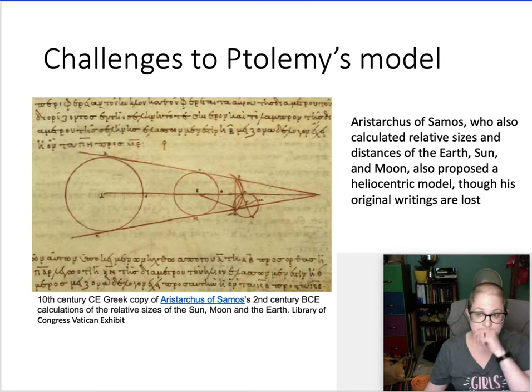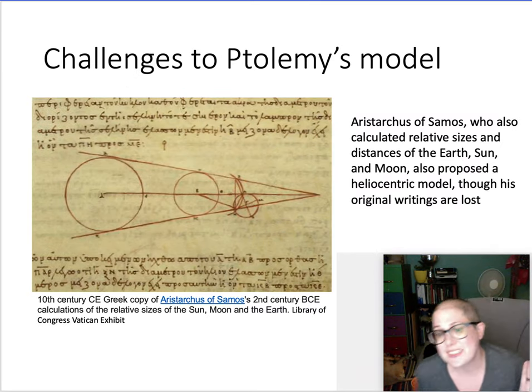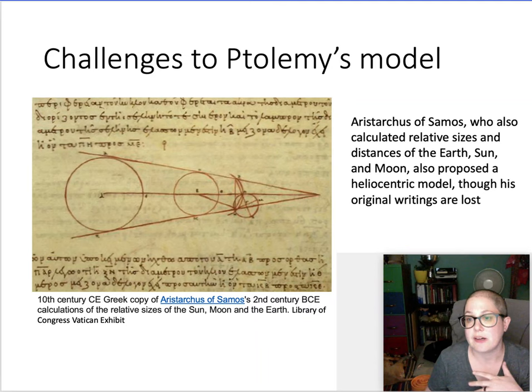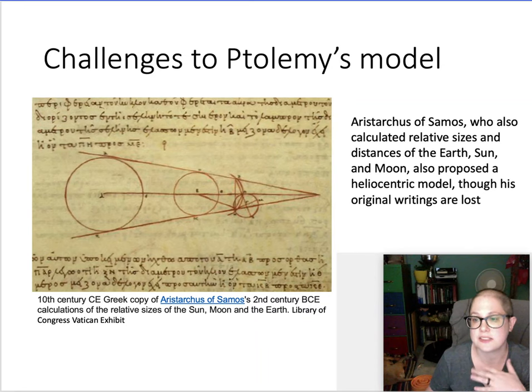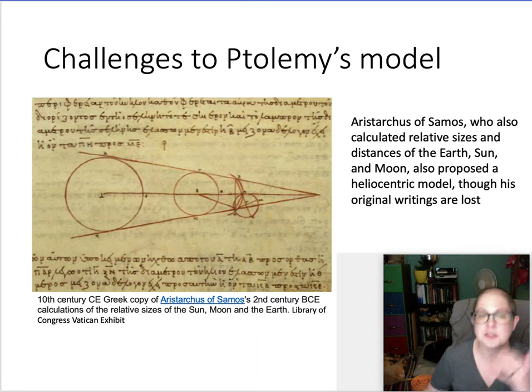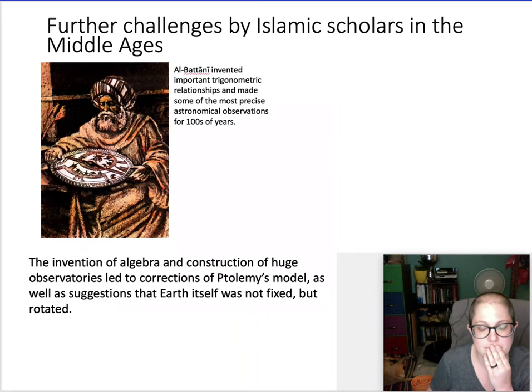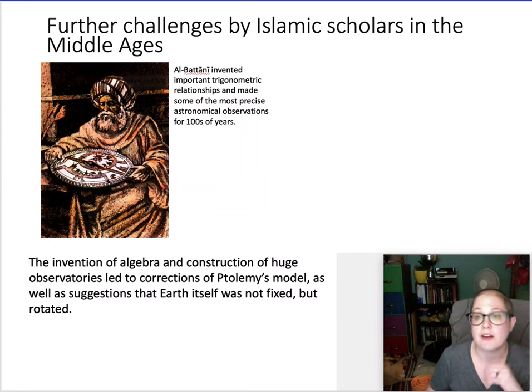Eventually there began to be challenges to this model, more serious scientific challenges. These started actually in ancient Greece. We talk a lot about how the Greeks thought the earth was the center of the universe and that's it, but there was some debate there. Aristarchus of Samos was famous for calculating the relative sizes and distances of the earth and the sun and the moon. He also proposed a heliocentric model, however, so it's been referenced but the original writings where he did that were lost, so you don't hear a whole lot about it.